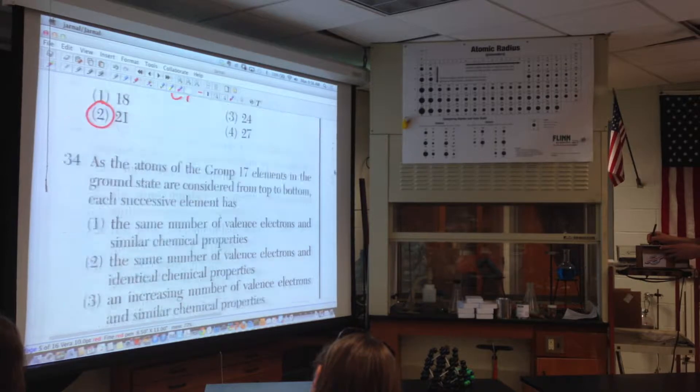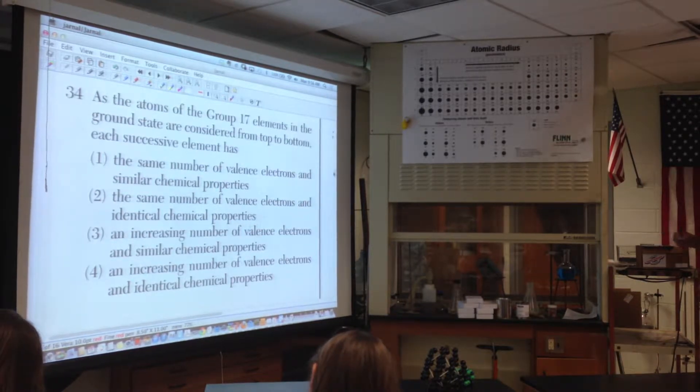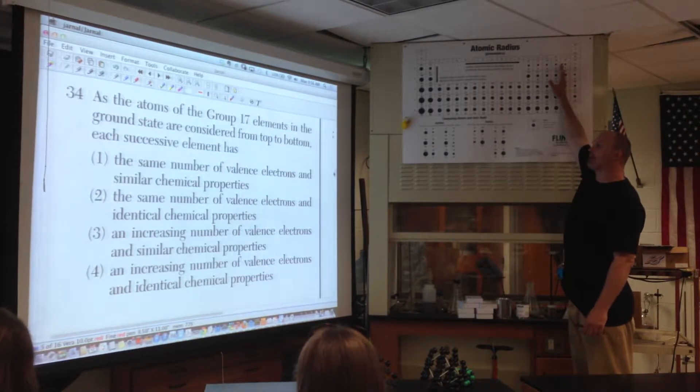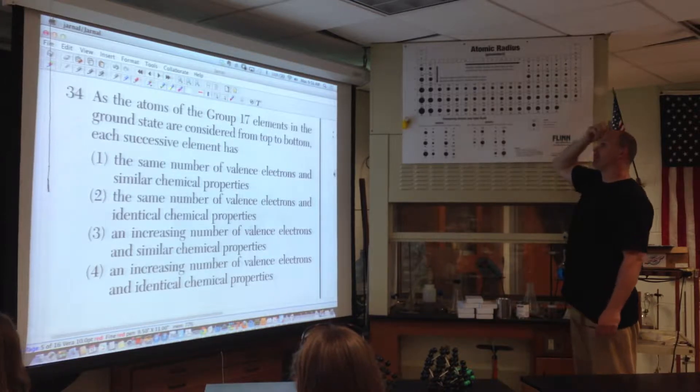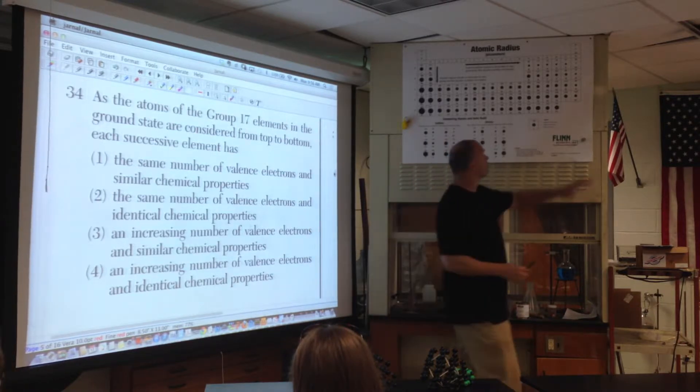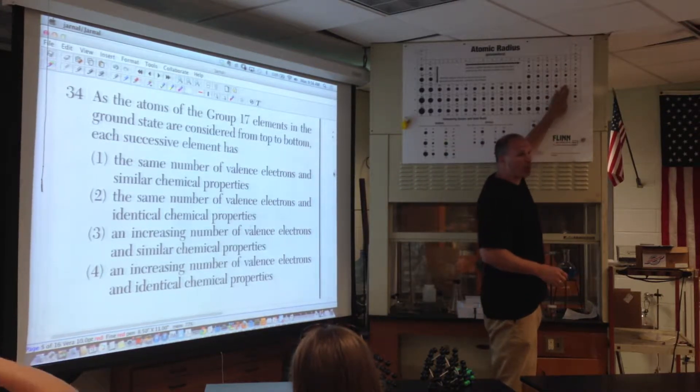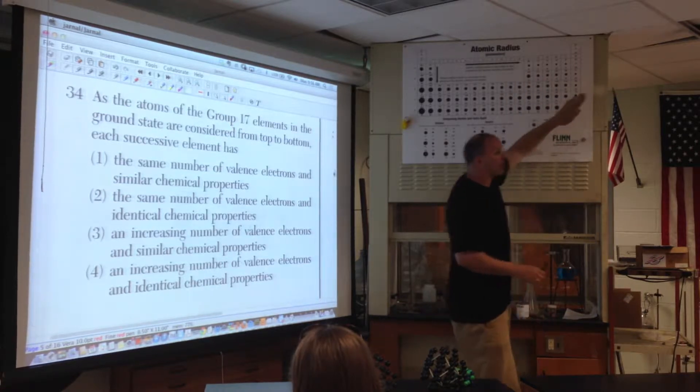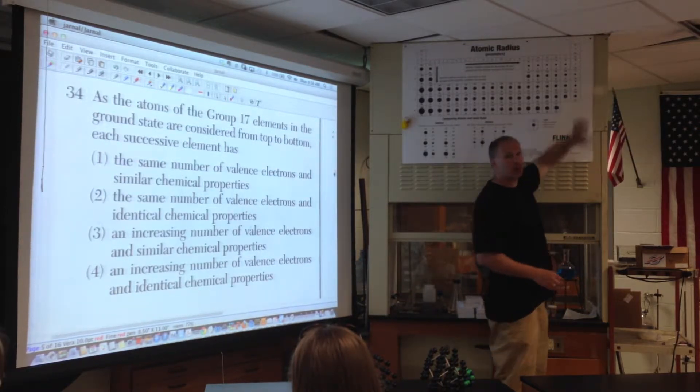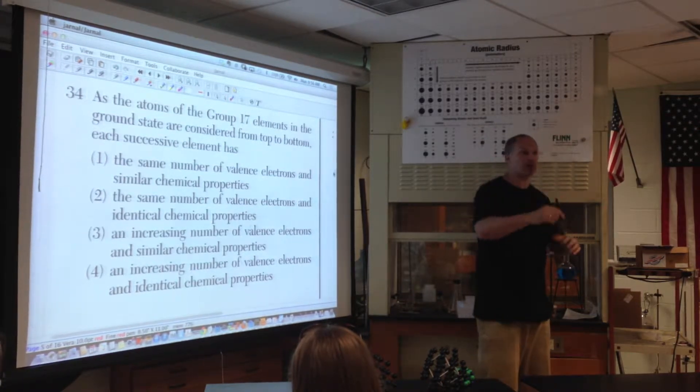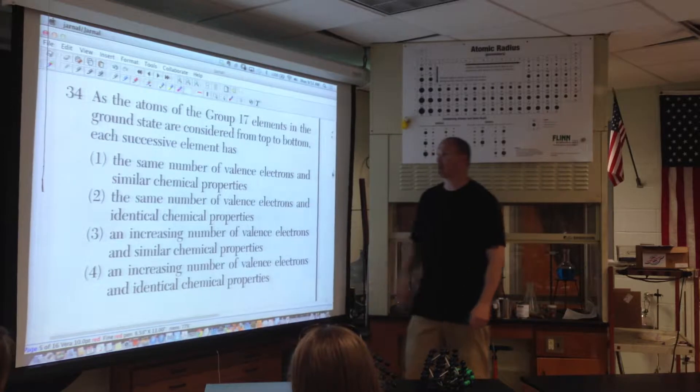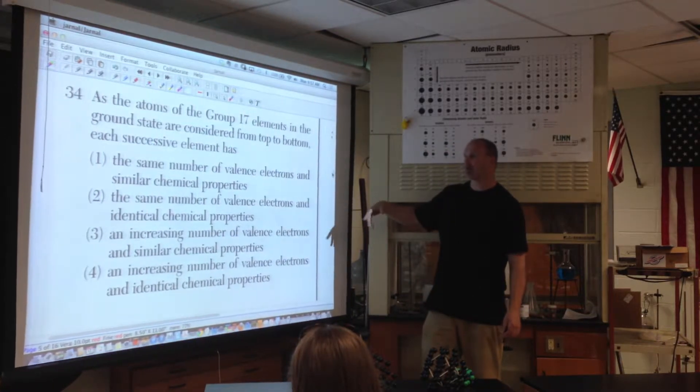34. As the atoms in group 17, here we go. As my halogens in the ground state are considered from top to bottom, from smaller to big. Each successive element has the same number of valence electrons. Yes. The reason why Dimitri Mendeleev put them in a certain order. He noticed as I put atoms and I got heavier, he noticed the properties were repeating over and over again. Why do they have the same properties? Because they have the same valence electrons.